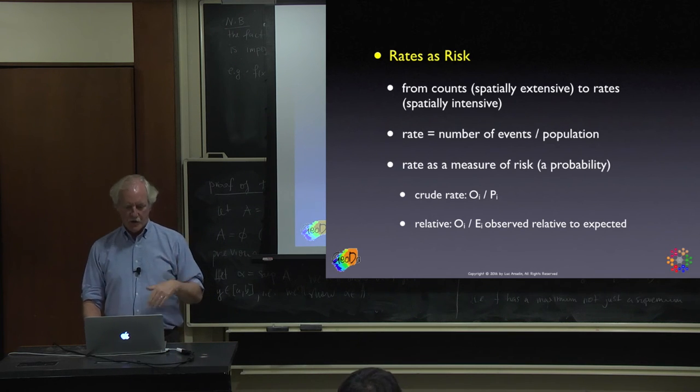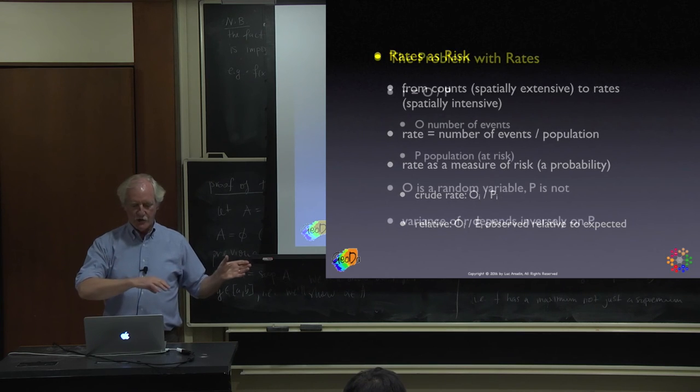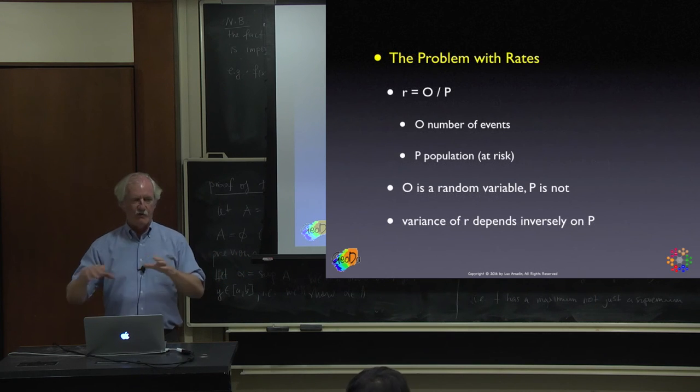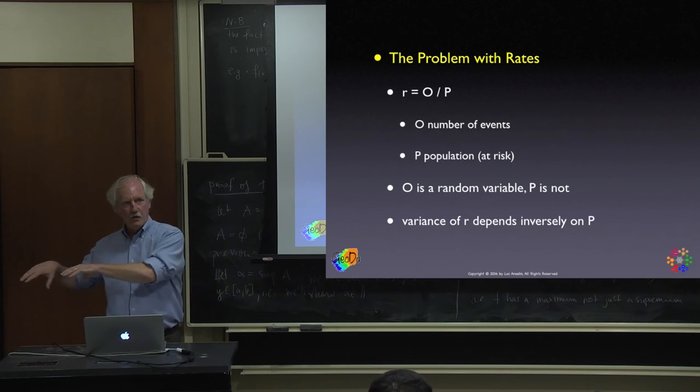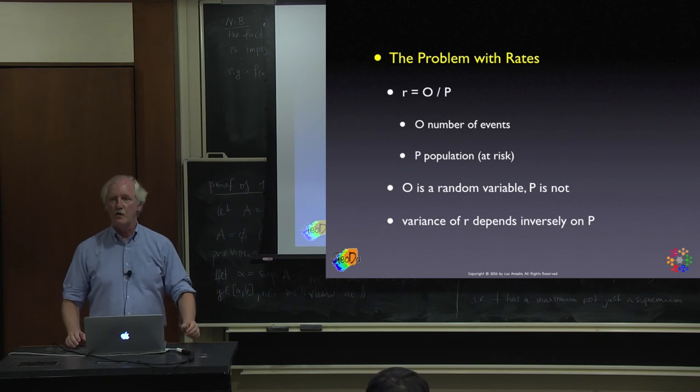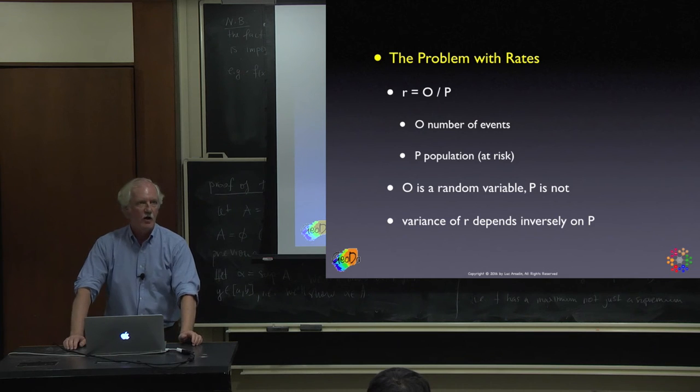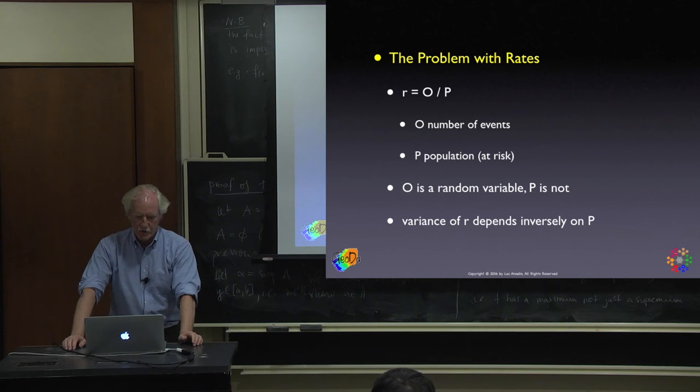Rather than taking the number of homicides over the county population, you take the actual count over what you'd expect under uniform national risk. If larger than 1, you have more homicides than average; less than 1, fewer. Everything said about raw rates transfers readily to relative rates.